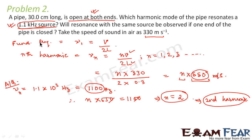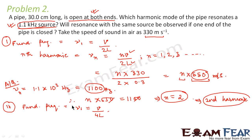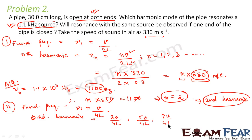Now the second part of the question asks: will resonance with the same source be observed if one end of the pipe is closed? If one end is closed, the fundamental frequency nu₁ will be equal to V by 4L. Also, when one end is closed, you will only get odd harmonics — that is 3V/4L, 5V/4L, 7V/4L and so on.